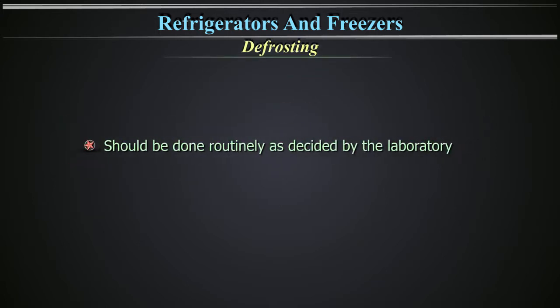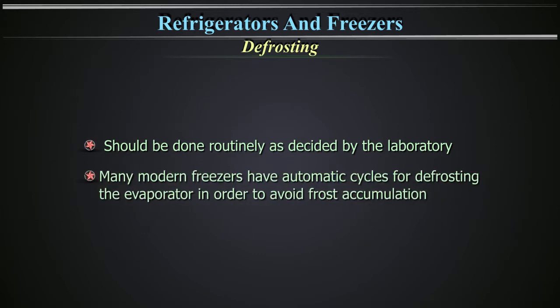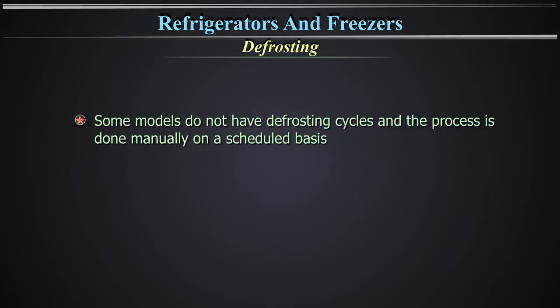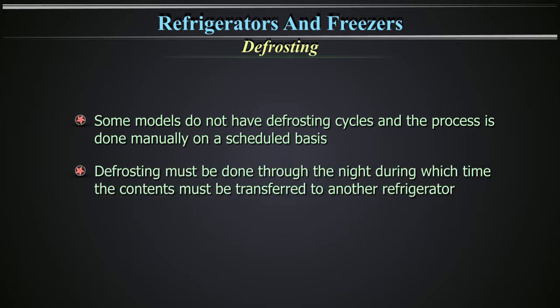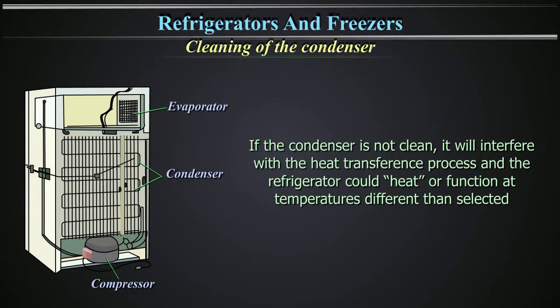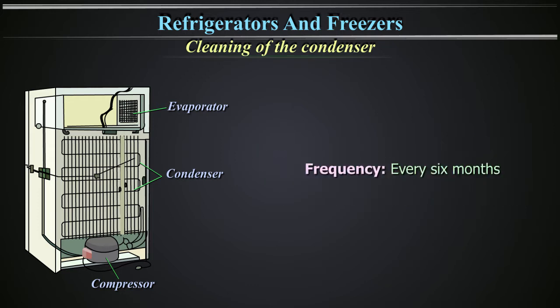Defrosting should be done routinely as decided by the laboratory. Many modern freezers have automatic cycles for defrosting the evaporator in order to avoid frost accumulation. Some models do not have defrosting cycles and the process is done manually on a scheduled basis. Defrosting must be done through the night, during which time the contents must be transferred to another refrigerator. Condenser cleaning frequency is every 6 months.